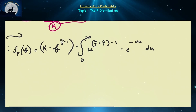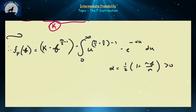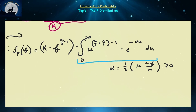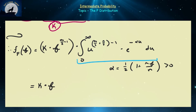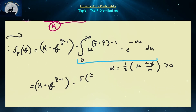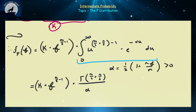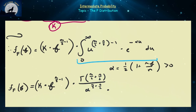This integral is in the form of U^(something - 1) times e^(-alpha*U) dU — a very important identity worth proving on your own. Applying this identity gives K times F^(M/2 - 1) times Gamma((M+N)/2), scaled by alpha^((M+N)/2). That gives us our probability density function for the F distribution.